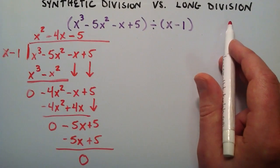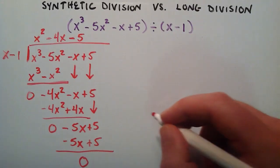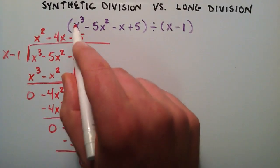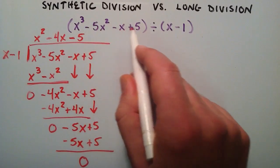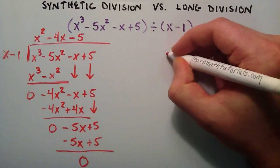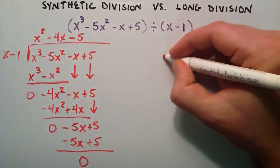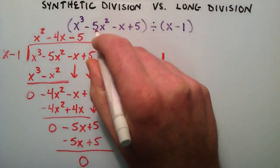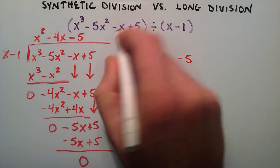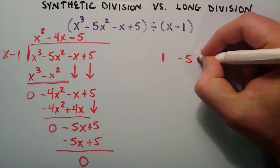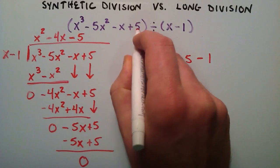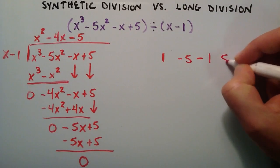Now let's look at the quicker synthetic division method. Instead of doing all that work, we're going to look at the coefficients of the polynomial and just write them down. The coefficient of x to the third is one, the coefficient of x squared is negative five, the coefficient of x is negative one, and the constant is just five.